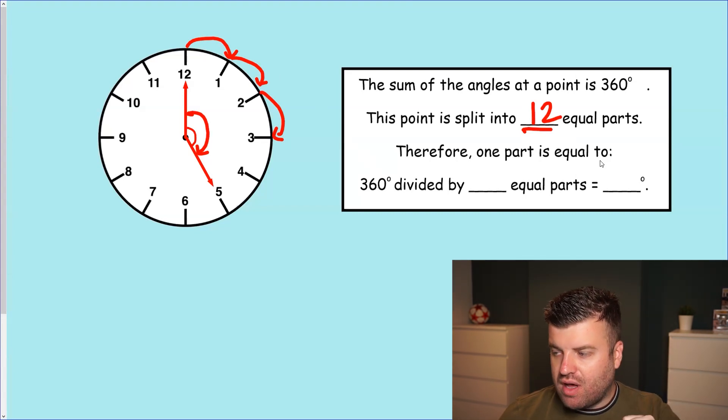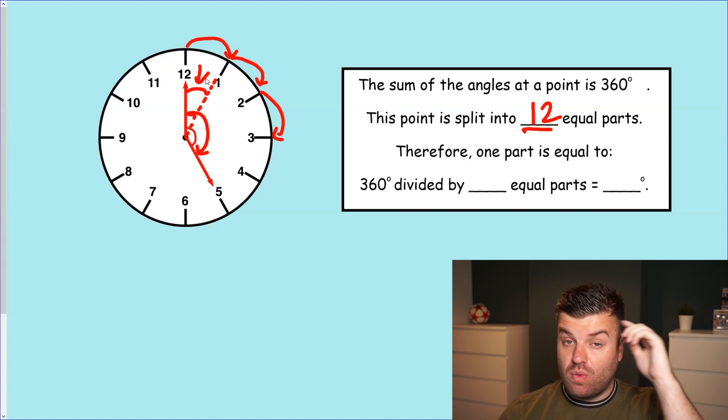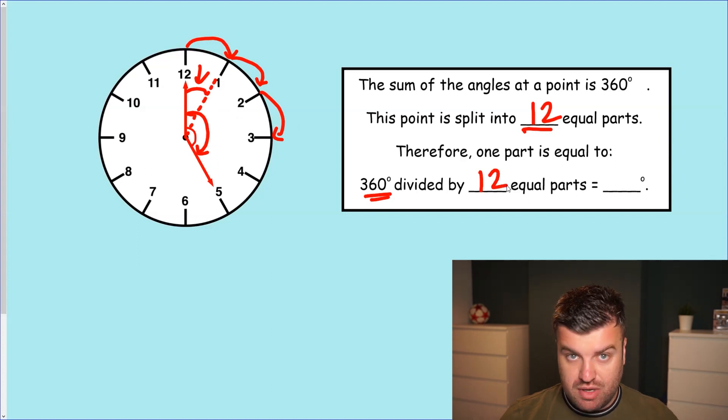Therefore, one part is equal to. Here's what we've got to do. We've got to work out what one of these parts here is equal to as an angle. What is that angle there as it turns from 12 to 1? And the way we do this is 360, the full turn, divided by 12, because that's how many equal parts there are in the full turn.